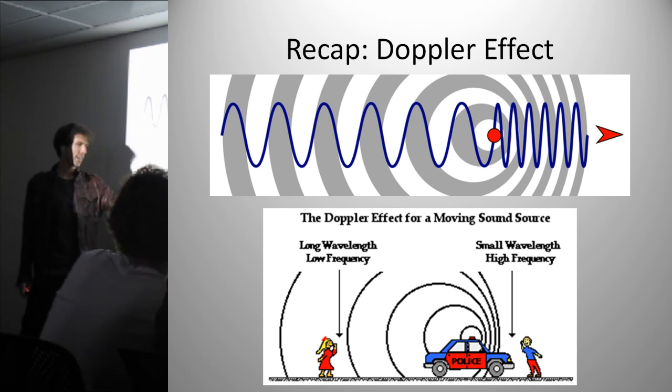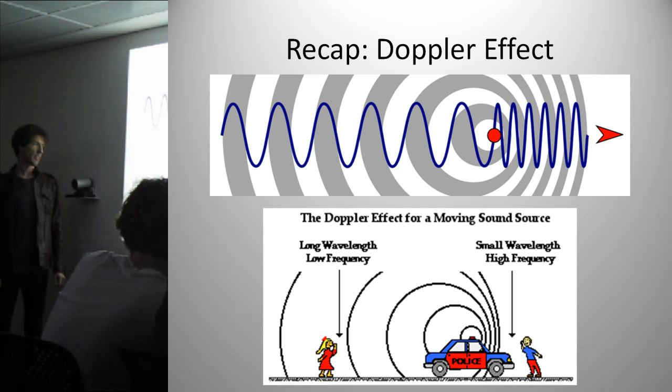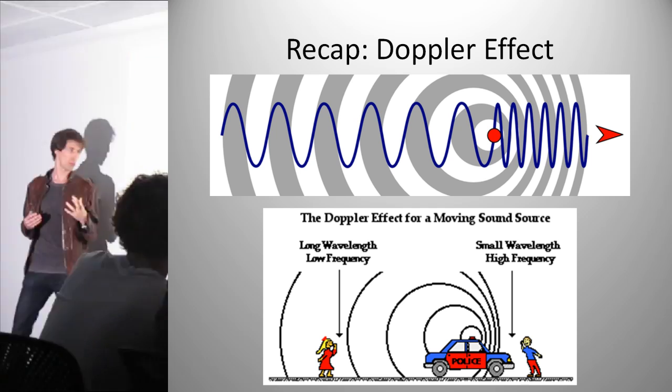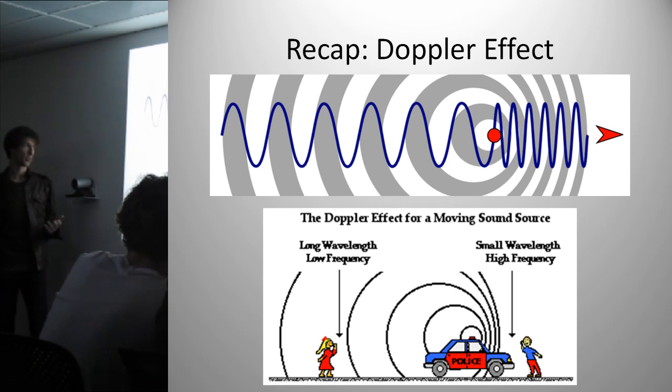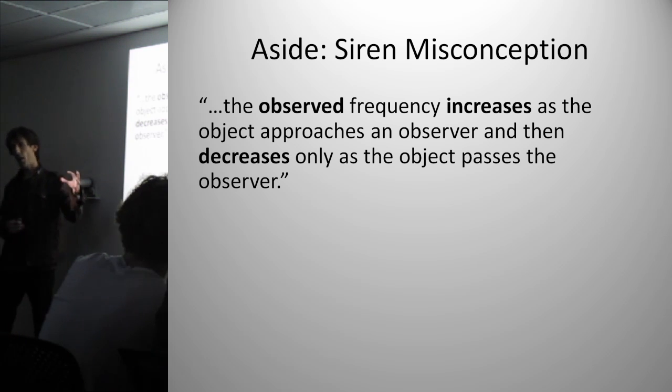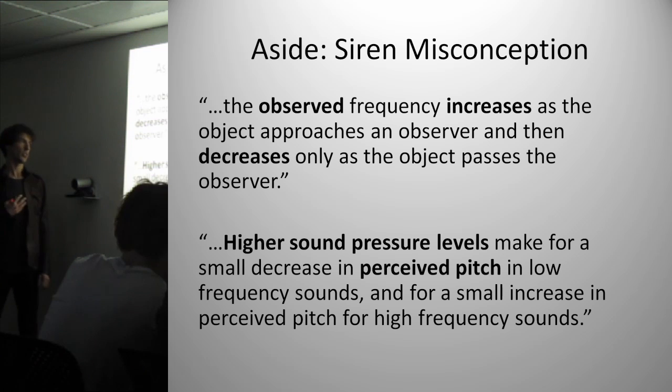If you're standing in any particular position, then obviously as the siren is coming toward you, it will sound higher, as soon as it passes, you go lower again. Just as a quick aside, this might interest you. It's a common misconception that if the car is travelling at constant velocity, then there is actual monotonic increase and then decrease in frequency as it passes by you. This is actually not entirely true, and it's actually something to do with the sound pressure levels into your brain and your ear, playing tricks on you.